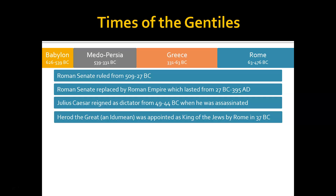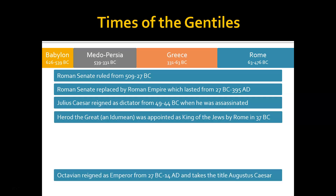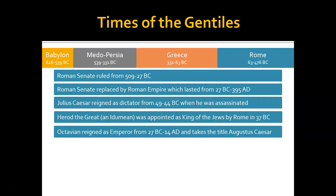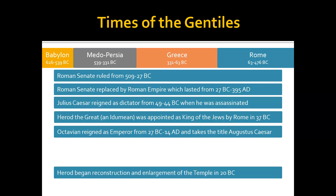Israel did not have control over who was established as their rulers, governors, and kings. Herod was given the title King of the Jews by Rome in 37 BC — that's why Herod was obviously troubled when the wise men came to him in Matthew chapter 2 and said, 'Where is he who has been born King of the Jews? For we have seen his star in the east and have come to worship him.' Octavian reigned as emperor from 27 BC until 14 AD, taking the title Augustus Caesar. In the birth narratives of the Lord Jesus, we read about Augustus Caesar making a decree that everyone should return to their home place, so Mary and Joseph had to travel to Bethlehem, ensuring the Lord Jesus was born there and fulfilled the prophecies in Micah chapter 5.